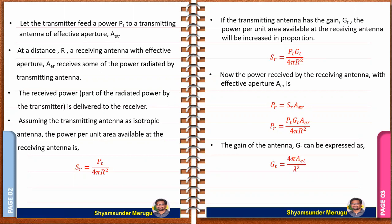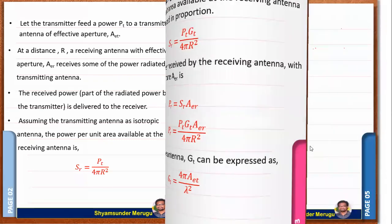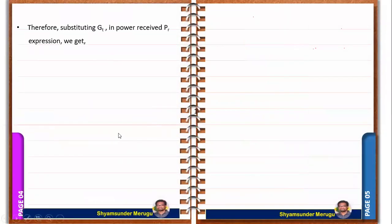The gain of the transmitting antenna GT can be expressed as GT equal to 4π·AET by λ². Therefore, substituting GT in the power received expression, we get PR equal to PT multiplied by (4π·AET / λ²) multiplied by AER, divided by 4πR².